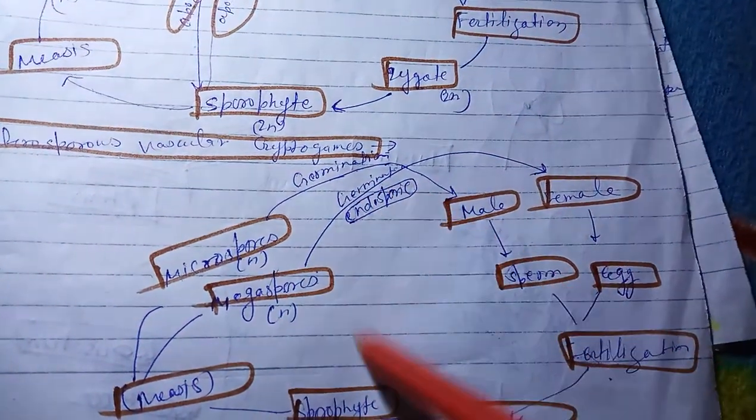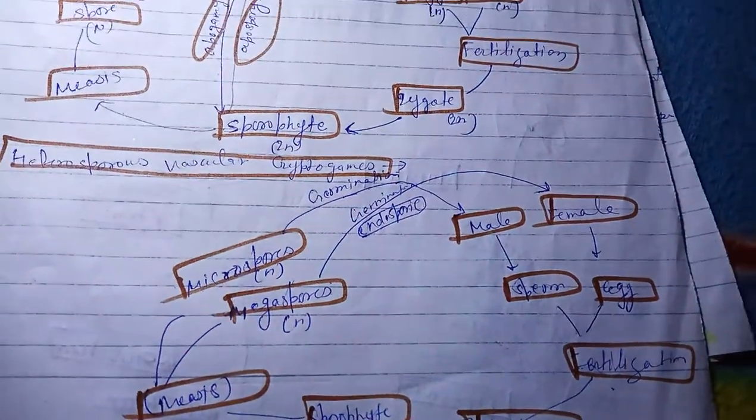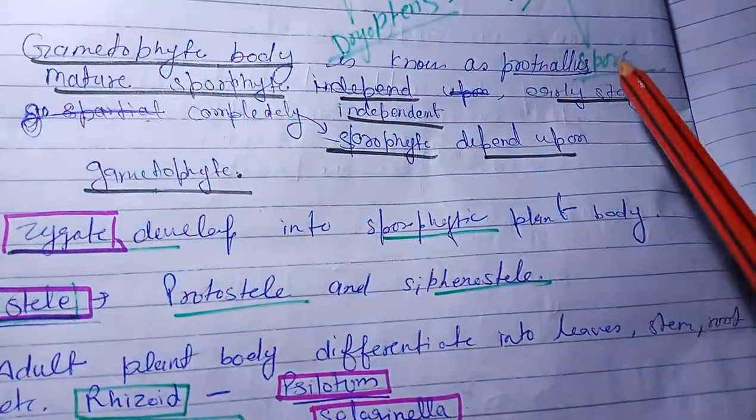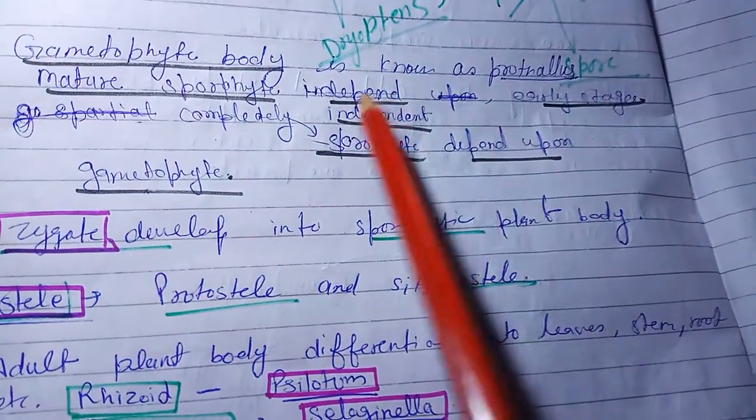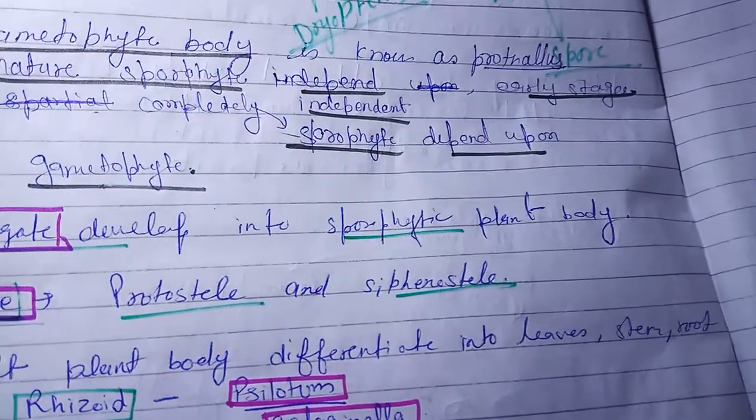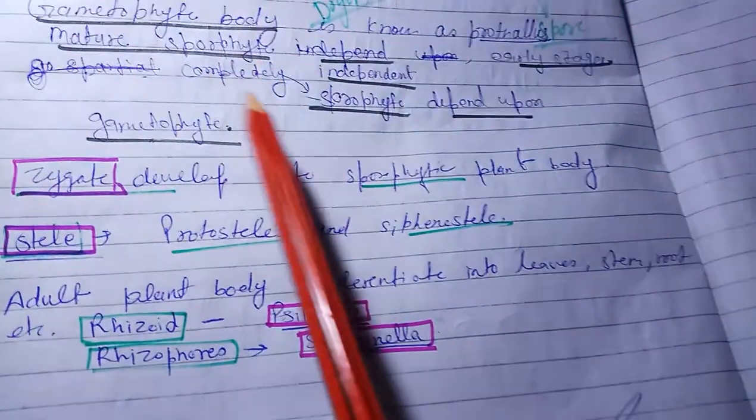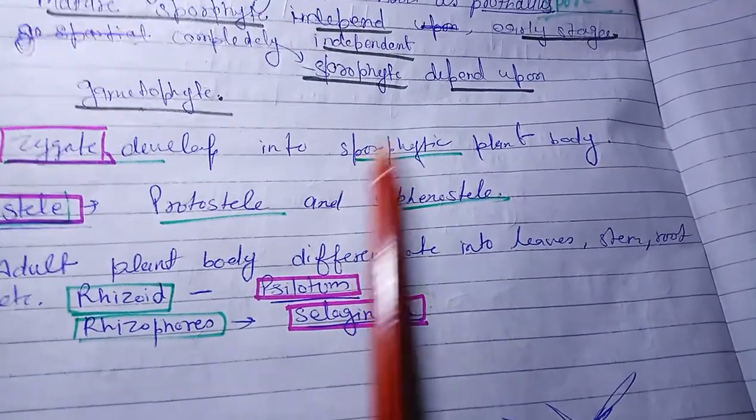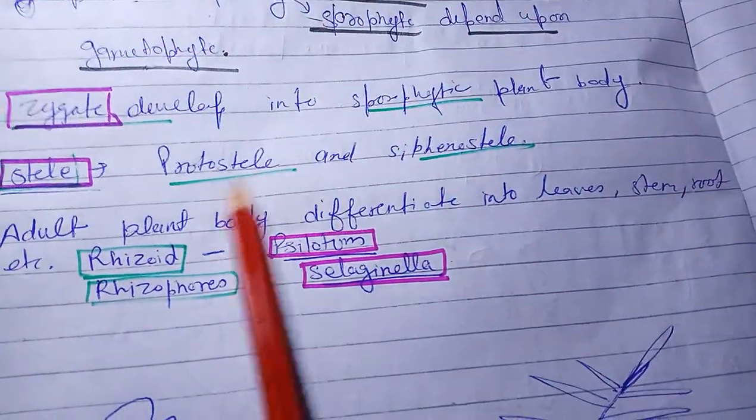They are germinating and this process is called endosporic process. Gametophytic plant bodies are prothallus-like and mature sporophyte is independent. In early stages sporophyte depends upon the gametophyte. Zygote develops into sporophytic plant body with suspensor. Prothallus and suspensor are well developed and present in pteridophytes plant.